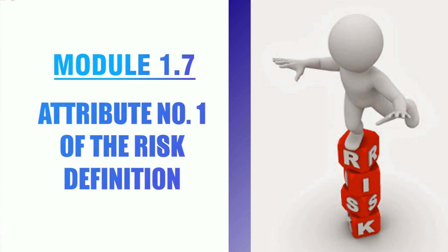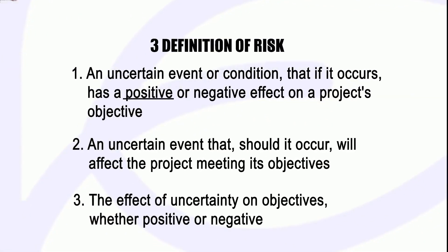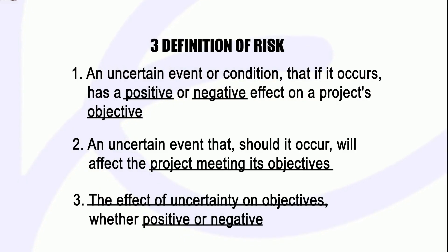Welcome to part 7 of this course on Risk Management for Farming Enterprises. In part 7, we're looking at attribute number 1 of the risk definitions. In part 6, we looked at three different definitions of risk and underlined some key terms. What we want to do in part 7 is look at the first attribute we picked out from all three definitions.